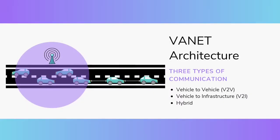VANETs consist of onboard units and roadside units, and they are deployed along highways or sidewalks. This provides communications between vehicle-to-vehicle and communications between vehicle-to-infrastructure.